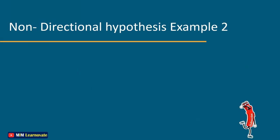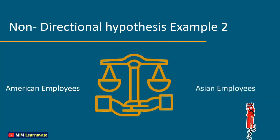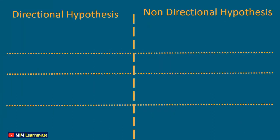Non-directional hypothesis example 2: There is a difference between the work ethic values of American and Asian employees. In this example, you can see that we do not know whether the work ethic values are stronger in Americans or Asians. The direction of the relationship is not known, so we will use a non-directional hypothesis.